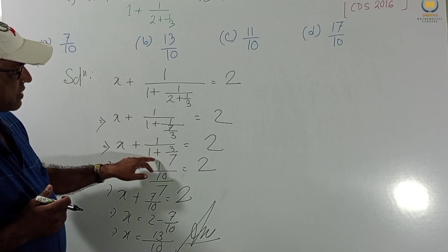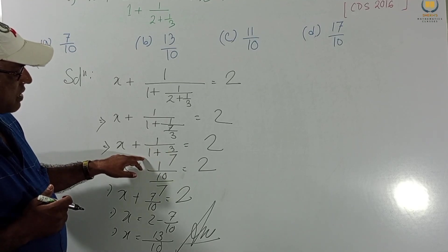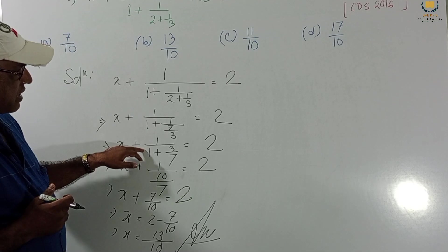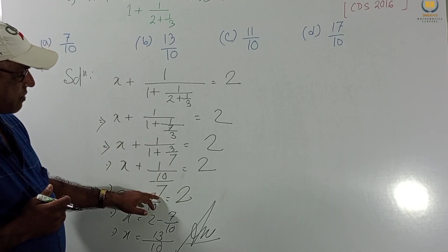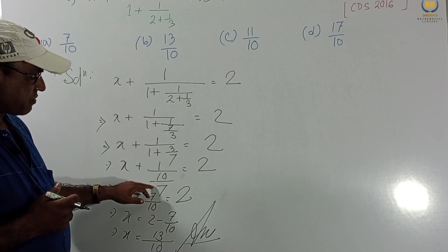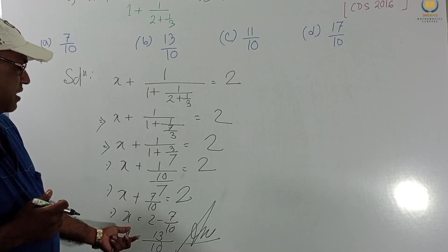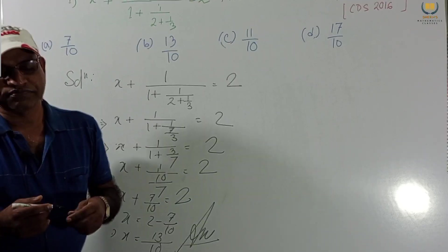This denominator is 1. 7 is LCM. 7 and 3, 10. 10 by 7. And so again, 7 becomes in numerator. Then this one. Ultimately, we get this answer. Here is this problem.